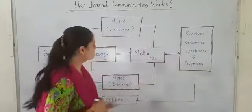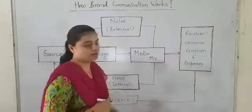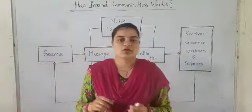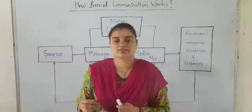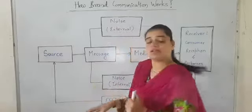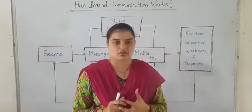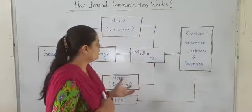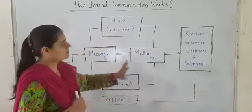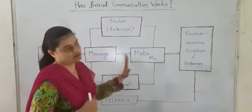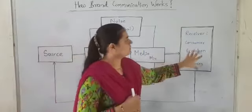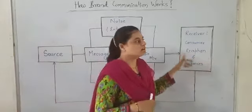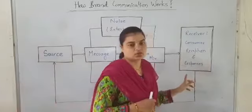The last part of the brand communication model is feedback — the reaction of the audience to a particular message. So this brand communication model starts from the source, then the message, then the media mix, and finally the receiver, where we check consumer reception of the message and the responses.